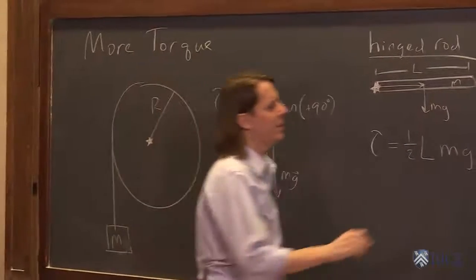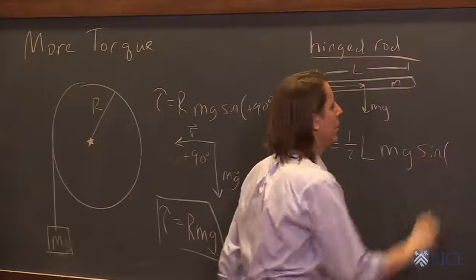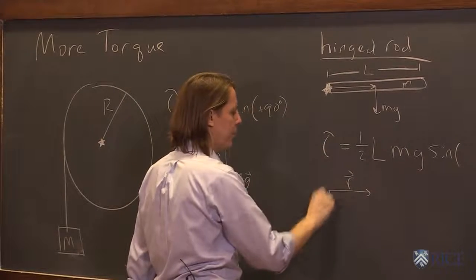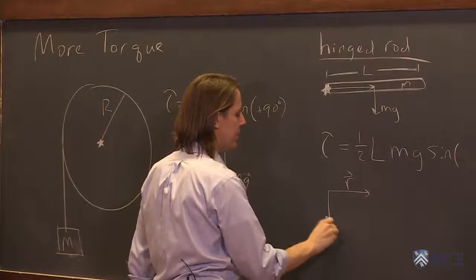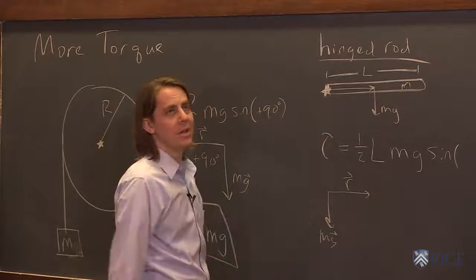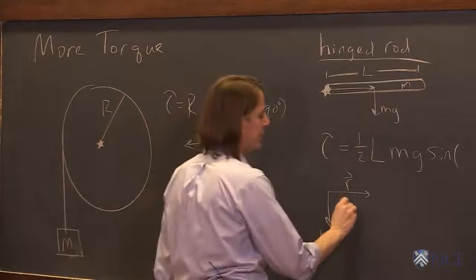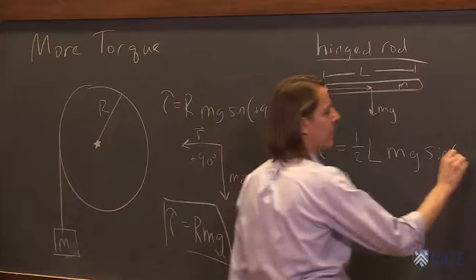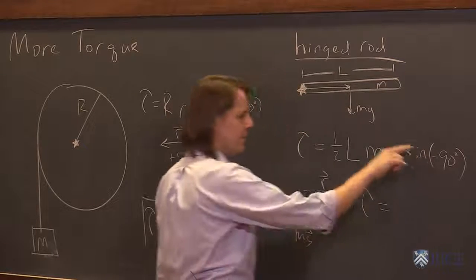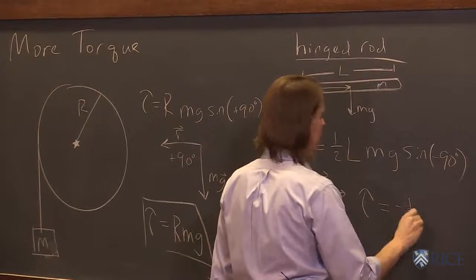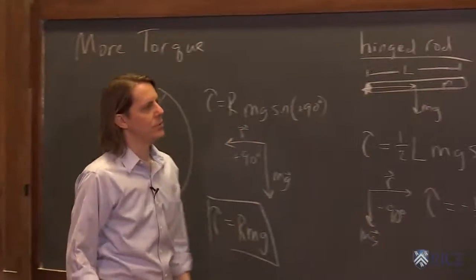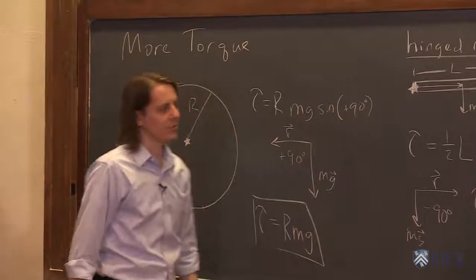And then the sine of the angle between them. Well, if we draw them tail to tail, there's r. And the force tail to tail is mg like that. So it is 90 degrees. But we have to go from r to mg. It's clockwise. So that means it's minus 90 degrees. The sine of minus 90 degrees is minus 1. So the torque in this case is minus 1 half l mg, is the torque about that axis right there.